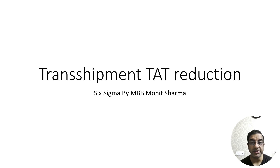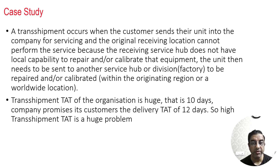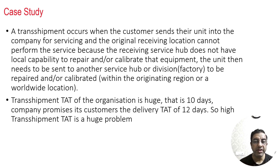This case study is about transshipment turnaround time delay. To understand this case study, we need to understand what a transshipment TAT is. A transshipment occurs when the customer sends their unit into the company for servicing and the original receiving location cannot perform the service because the receiving service hub does not have the local capability to repair or calibrate the equipment. That can happen within the originating region or it can happen worldwide — it may have to be sent outside the country as well.